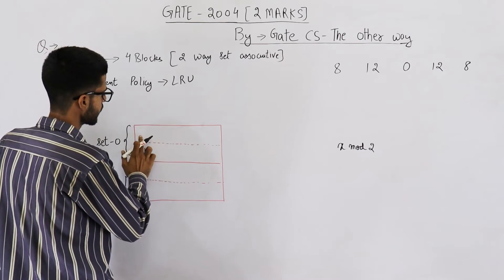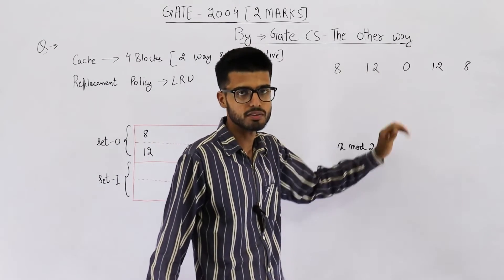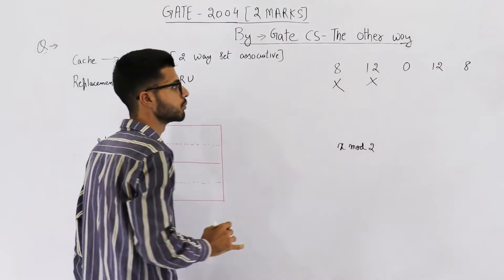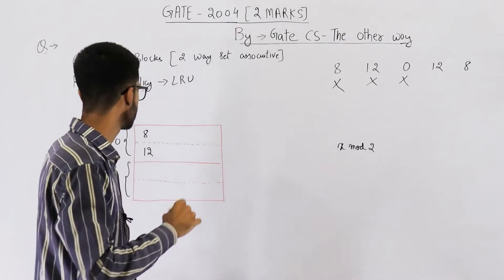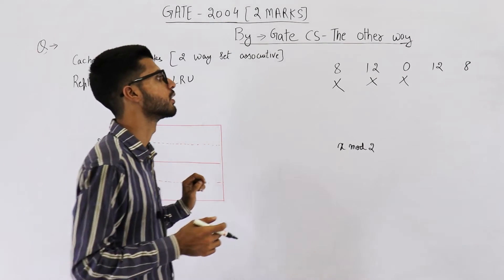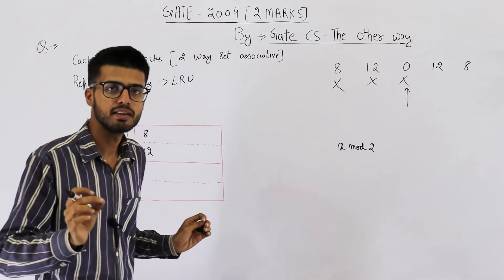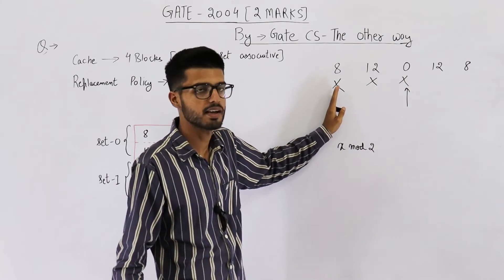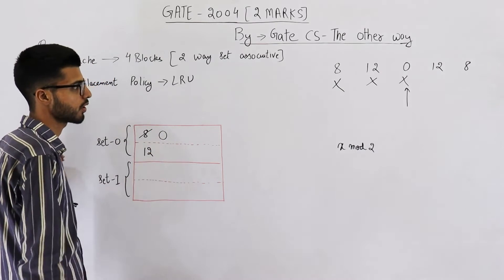This one was 8. I just wrote 0 by mistake. Next, we have reference to block number 0. Both of these were not present in cache. So both of these will be a miss. 0 is also not present in cache. This will also be a miss. Now we have to bring 0 from RAM and place it into cache. Where will you place? So from here, you look back into time and find the least recently used block out of 8 and 12. 12 is recently accessed. So least recently accessed will be 8. That means you are going to replace this block 8 and update it with block 0.